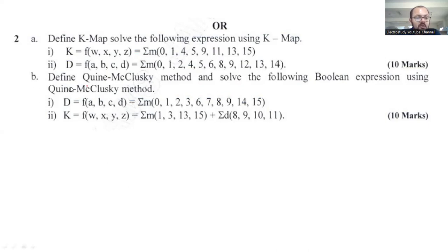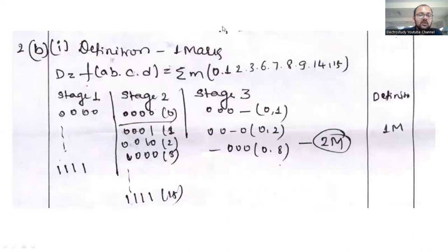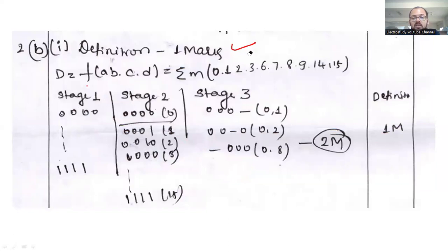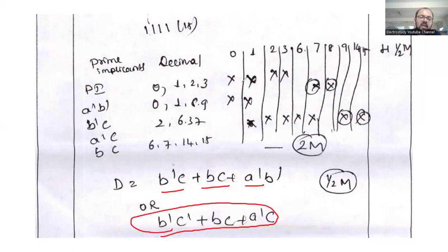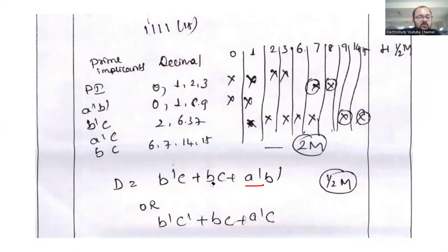Question number 2b: define the Quine-McCluskey method and solve the boolean expression using it. The definition carries one or two marks; the remaining marks require solving using the Quine-McCluskey method. There are different stages — stage one, stage two, stage three. The ultimate solution is: b-bar·c + b·c + a-bar·b-bar. You can verify using K-map as well, but solve by this method for full marks.